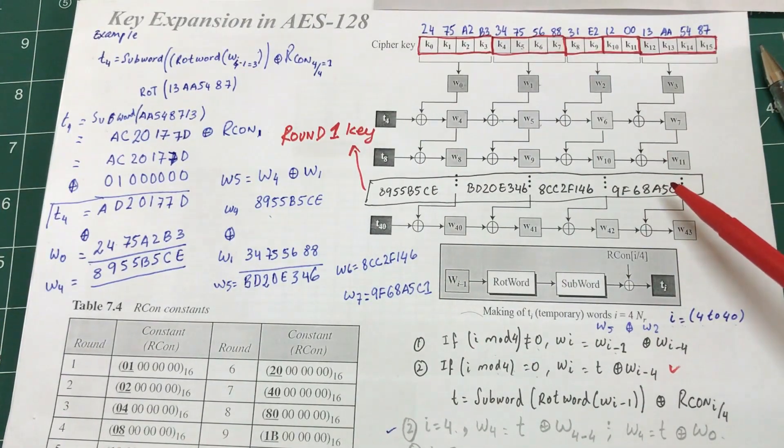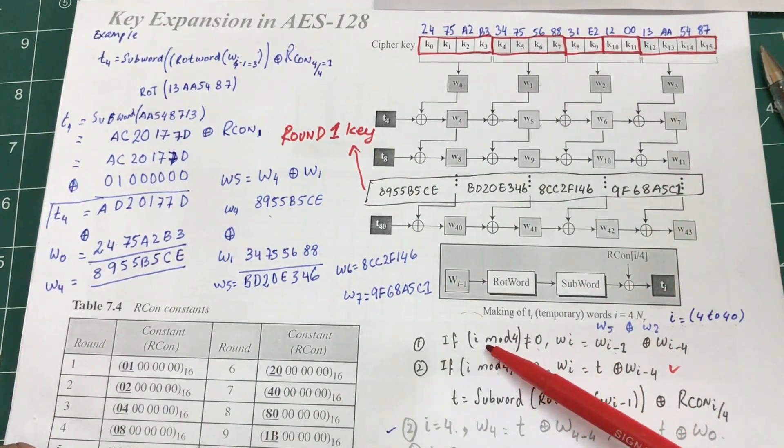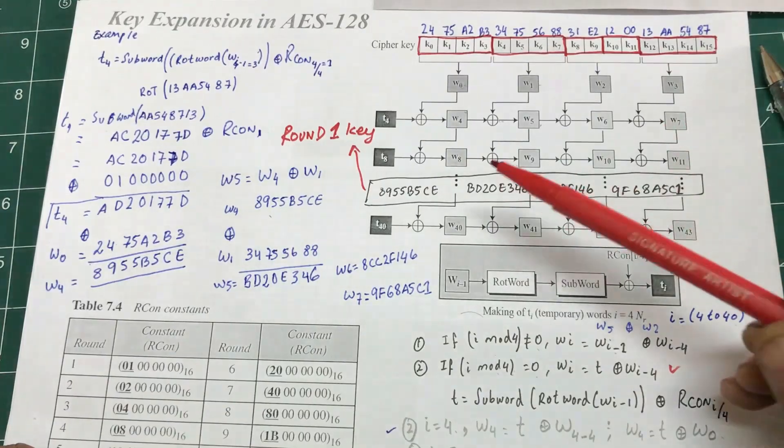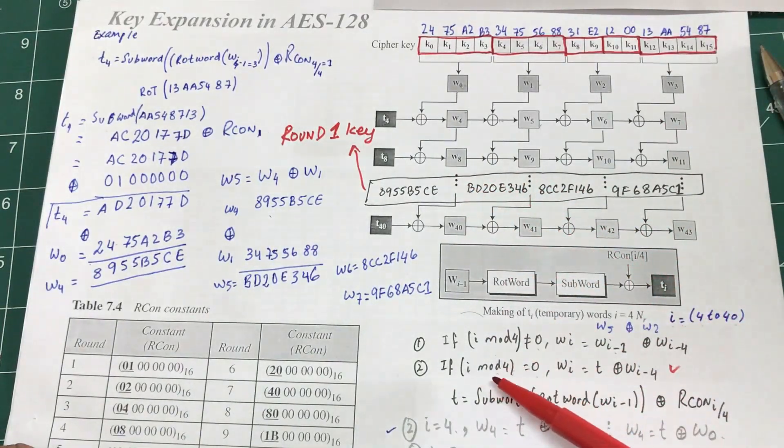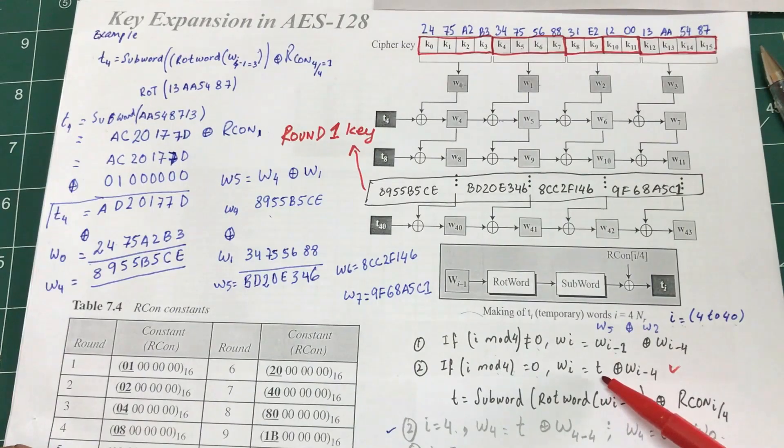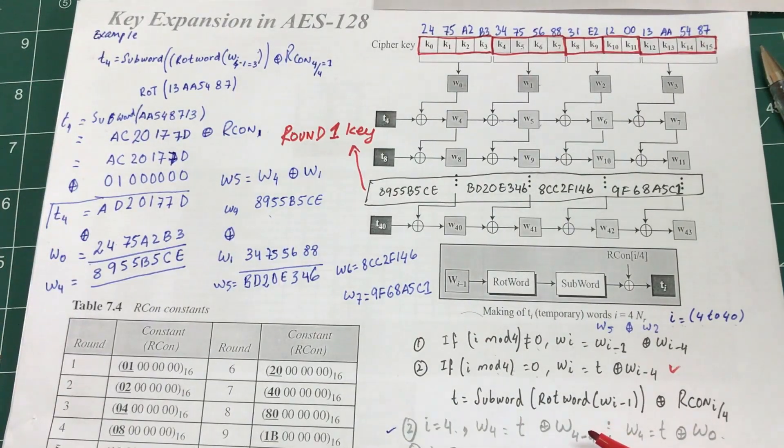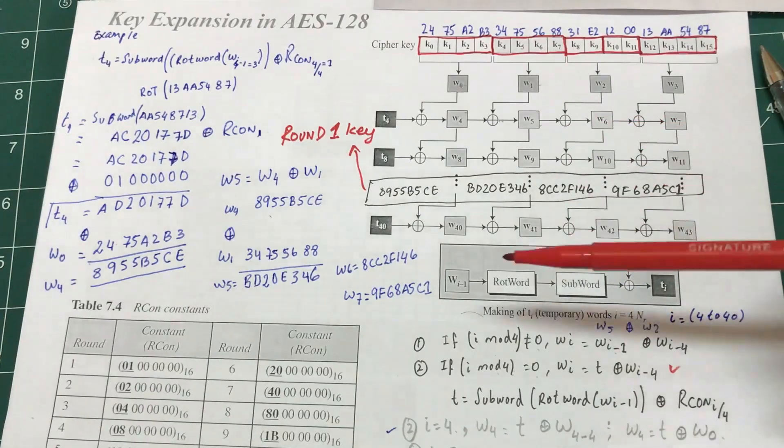For round number two, you're gonna do exactly the same thing. Because W7 is done, the next value is W8. So 8 mod 4 is 0, you're gonna calculate your t values using this same procedure that I showed you, and then you're gonna XOR it. Then for the rest of the values which are non-multiples of four, you're just gonna simply XOR them with the previous value.